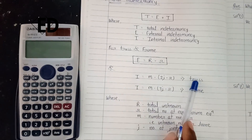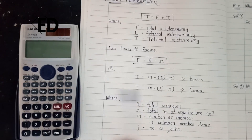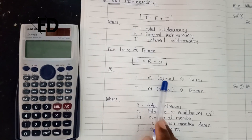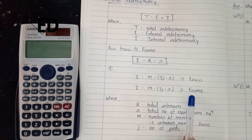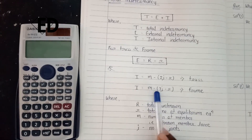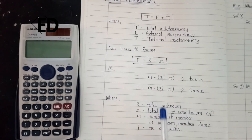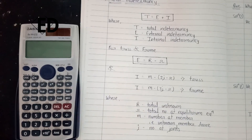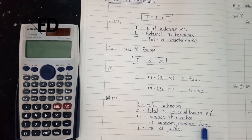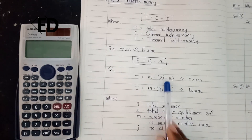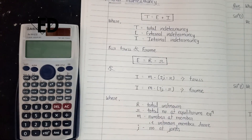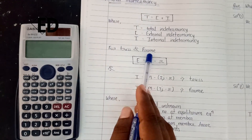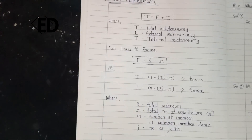For the internal indeterminacy formula: if we are applying it for the truss, we use m minus (2j minus r), and if we are using it for the frame, we use m minus (3j minus r), where m is the number of members — that is the unknown member forces — and j is the number of joints. Let's see how this formula is applied on the frame or truss to calculate the total degree of indeterminacy.